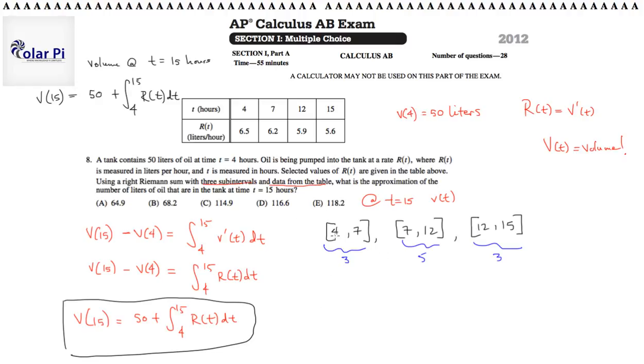But, because we're using right Riemann sums, on each of the intervals, we'd use the value on the right end. So, we'd use the value of R of T at 7, at 12, and at 15 in our computation. Right? So, because we're using right Riemann sums.